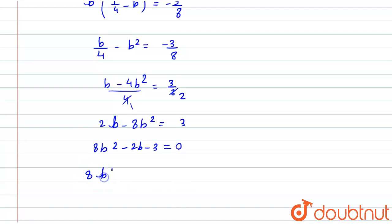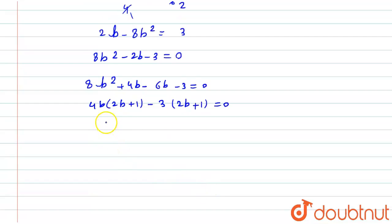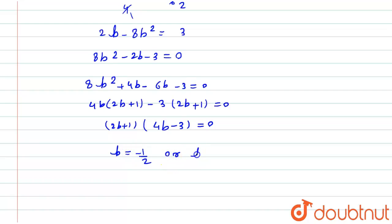Factorizing 8b² minus 2b minus 3 equals 0: this becomes 8b² plus 4b minus 6b minus 3 equals 0. Taking 4b as common: 4b(2b plus 1) minus 3(2b plus 1) equals 0. So (2b plus 1)(4b minus 3) equals 0, giving b equals minus 1/2 or b equals 3/4.